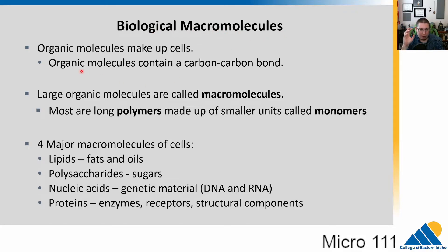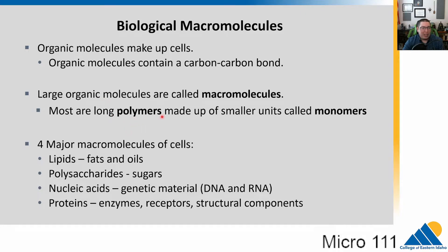These are the four things that make up cells. We have all of these being organic molecules — organic molecules are what make up cells. These are molecules that contain a carbon-carbon bond, and carbon and hydrogen as well. These large ones are called macromolecules, and most of them are something we call polymers. Poly means many, and mer means unit, so these are strings of many things stuck together.